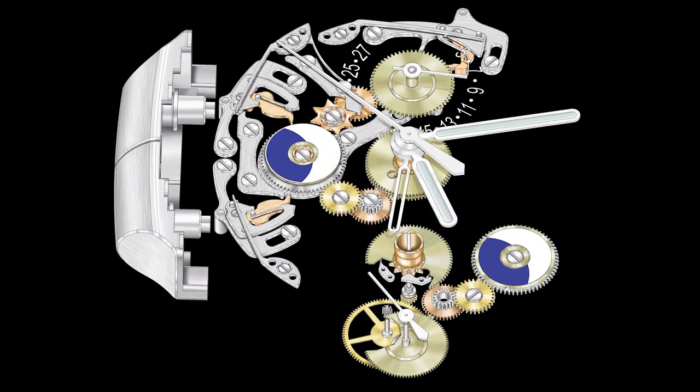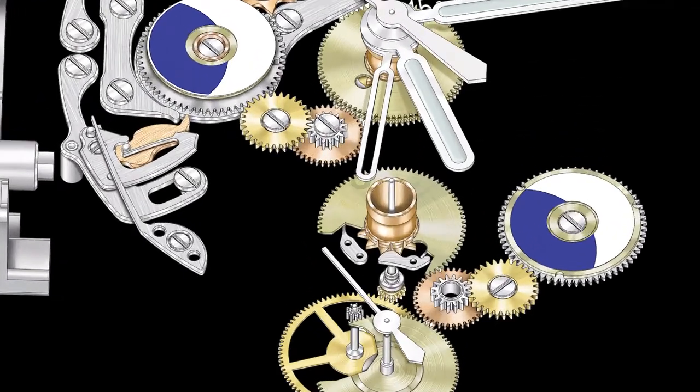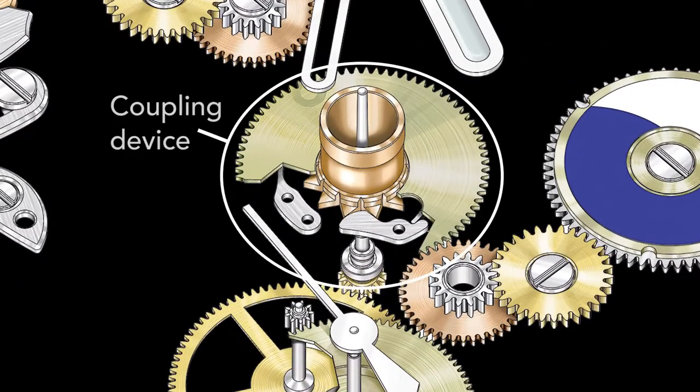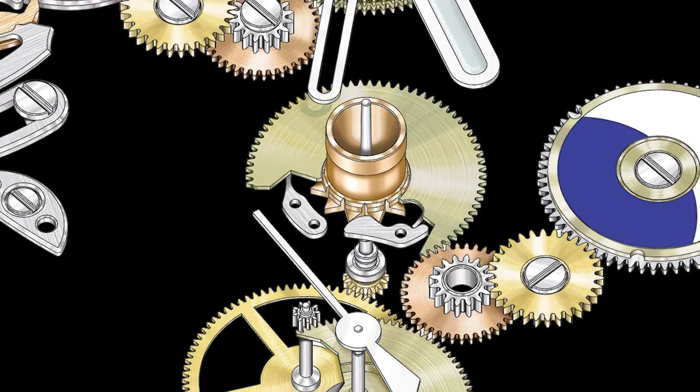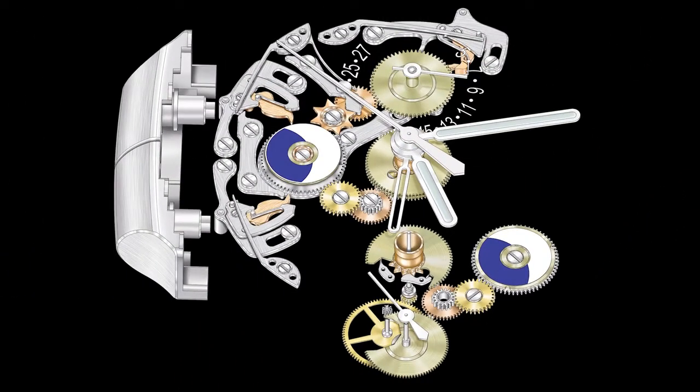During the correction process, the local hour hand is momentarily decoupled from the home hour hand via a coupling device that has a jumper, jumper spring, and 12-tooth star wheel to ensure an exact one hour jump in either direction. This decoupling is important as it eliminates unwanted disturbance on the movement and is not detrimental to accuracy.